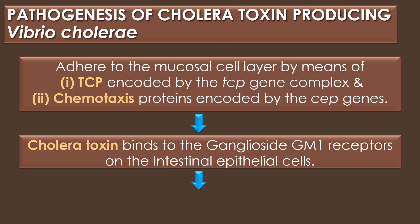Pathogenesis of cholera toxin-producing Vibrio cholerae: Vibrio cholerae is able to adhere to the mucosal cell layers by means of two factors. The first is TCP, encoded by the TCP gene complex, and the second is chemotaxis proteins, encoded by the CEP genes. Thus, TCP is important both as a receptor for the cholera toxin.